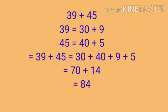Look at this example — here is 39 plus 45. First, 39 को expand करेंगे: 39 equals to 30 plus 9. Then 45 को expand करेंगे: 45 equals to 40 plus 5. Now, 39 plus 45 equals to 30 plus 40 plus 9 plus 5. First we add 30 plus 40 equals to 70. And now 9 plus 5 equals to 14. And now 70 plus 14 equals to 84. So clear होगे आपको कि आपने किस तरीके से पहले number को break किया — means expanded form में लिखा, then add.